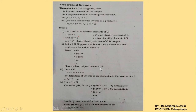Proof of (3): (A inverse) inverse = A. Let A belong to G. By definition of inverse, A · A inverse = E = A inverse · A. Therefore, by the definition of the inverse of an element, A is the inverse of A inverse. Hence (A inverse) inverse = A.